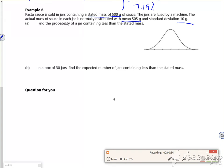Right then, so the normally distributed bit is what we want for the distribution. So X follows a normal 505 comma 10 squared. And I want the probability that it contains less than the stated mass, which is 500. So I want the probability that X is less than 500.